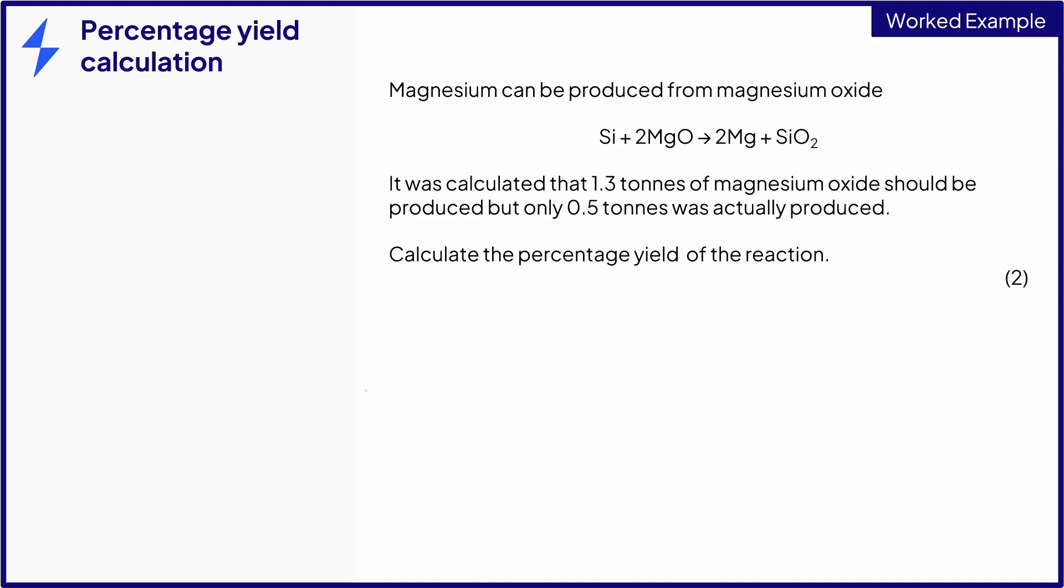Let's look at an example of a calculation involving percentage yield. This question is asking you to find the percentage yield of the reaction shown. Make sure that you read the question carefully so that you can identify the quantities that are given in the question. This value is the theoretical yield as you were told that this is the amount that has been calculated should be produced. And this amount is the actual yield as this is how much was produced.